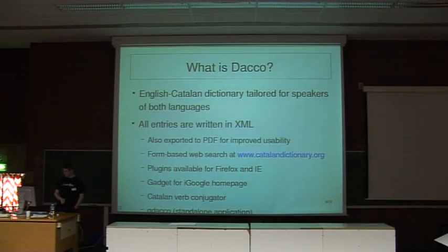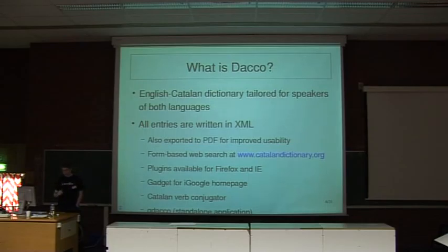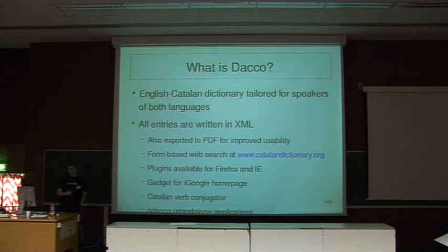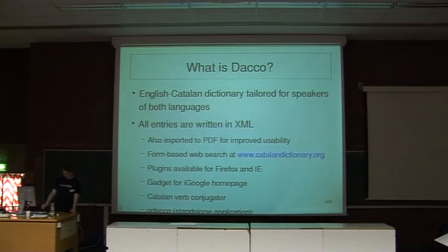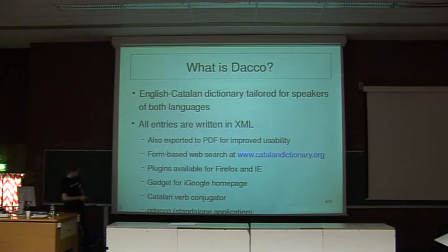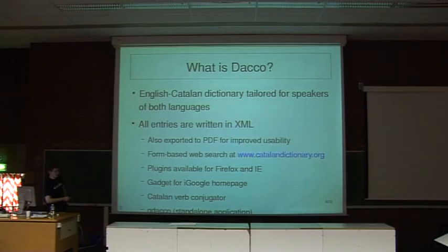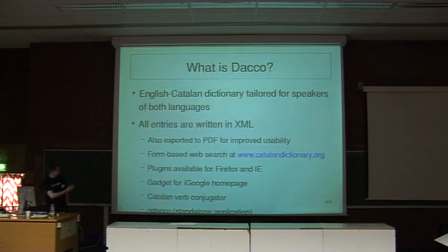All entries are in XML, and we export all the XML files to PDF files that you can open, search, or do whatever you want. We also have a form-based web search on our web page — you can type something using Ajax technology and it will show the translation. We have a plugin for Firefox and Internet Explorer, a gadget for iGoogle, a Catalan verb conjugator, and a standalone application called Kudako, which we'll spend the last five slides talking about.